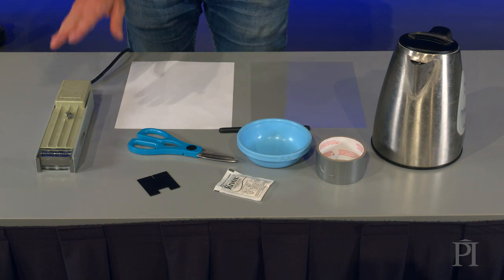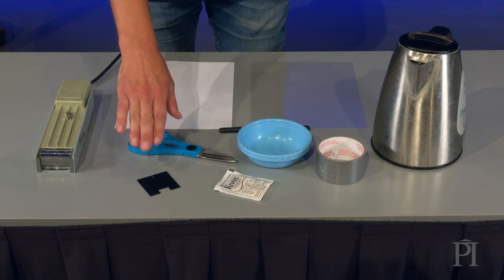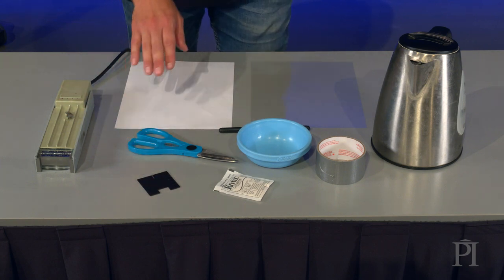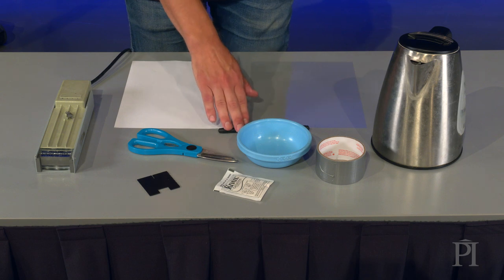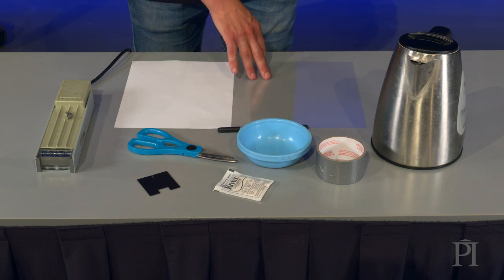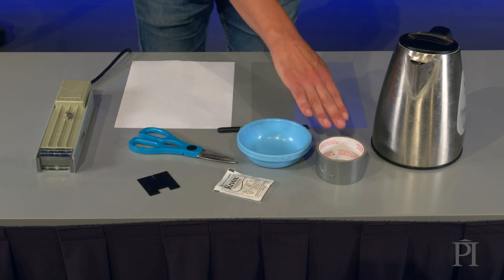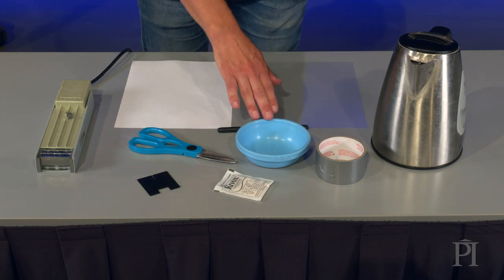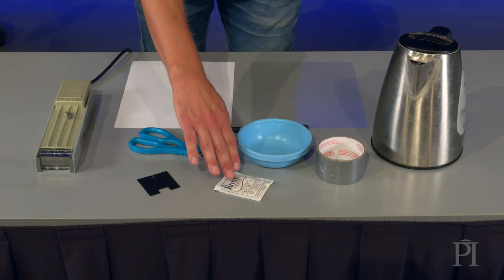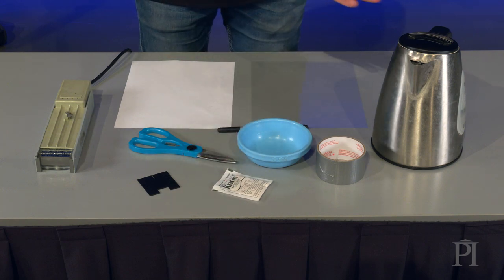The materials you'll need are a ray box, a slit plate with three slits, a piece of paper, a marker, a piece of plastic transparency, some scissors, some tape, a small flat bottom dish, some gelatin powder and some boiling water.